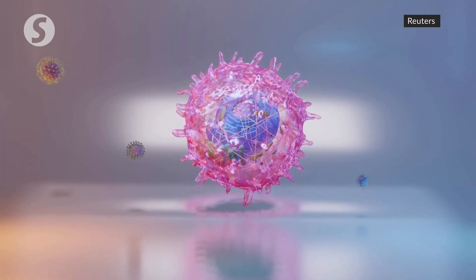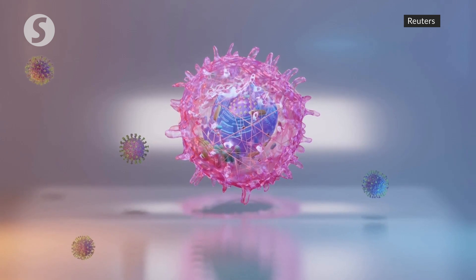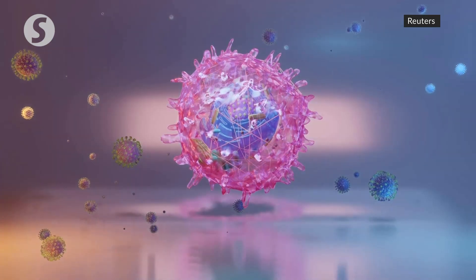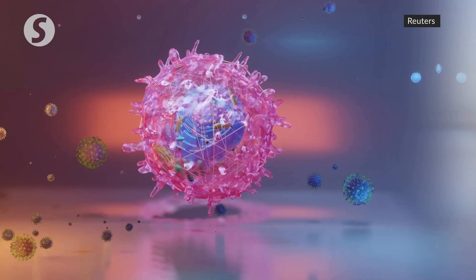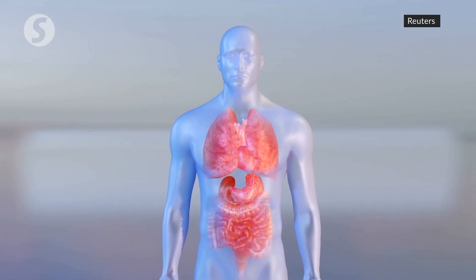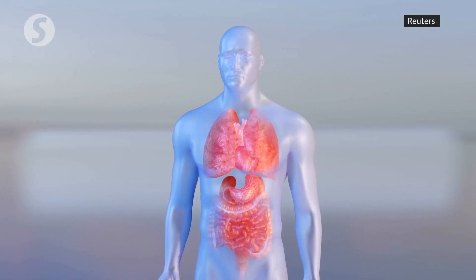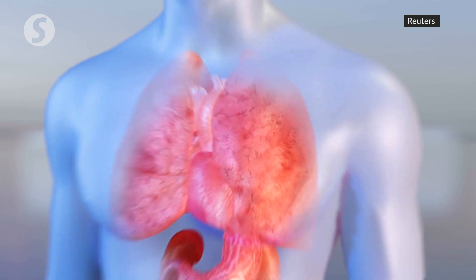Researchers from China have used cryo-electron microscopy to show how SARS-CoV-2 infects humans. The study published in Science says the virus targets a type of receptor found on human cells in the lungs, heart, kidneys and intestines.